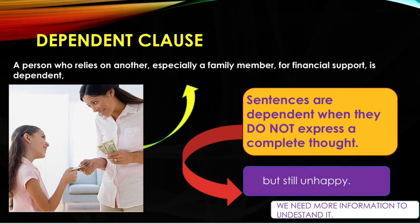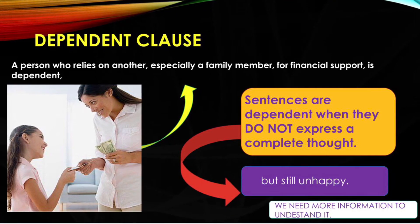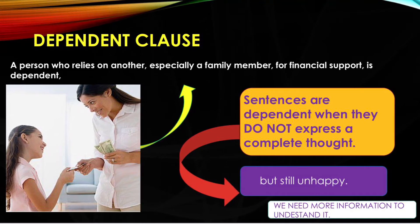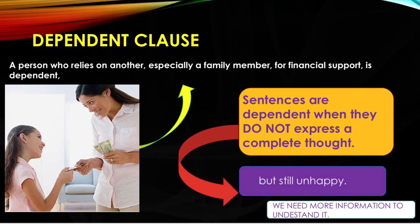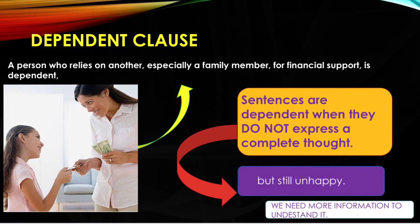On the other hand, a person who relies on another, especially a family member, for financial support is dependent. So, dependent clauses are sentences that depend on some other sentences because they do not express a complete thought.